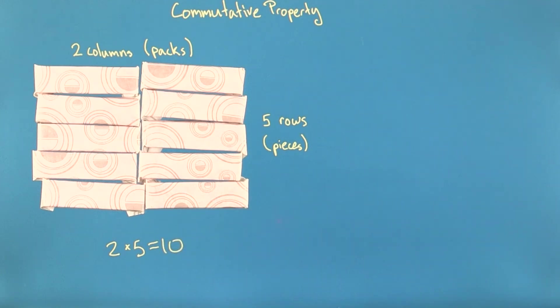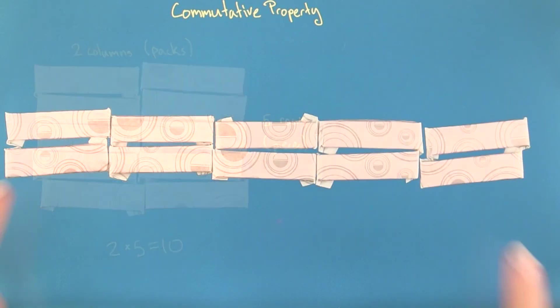But if I had instead bought five packs of gum with two sticks each, I would have five columns, and each column would have two sticks of gum. That would look like this.